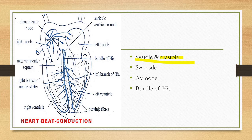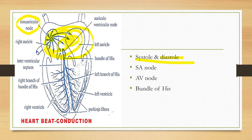The heart's working is initiated by specialized cardiac tissue cells called the sino-auricular node, or SA node, also known as the pacemaker of the heart. It generates an electrical impulse which spreads all over the auricles, causing auricular contraction. This impulse is then picked up by another node called the AV node, or auriculo-ventricular node.